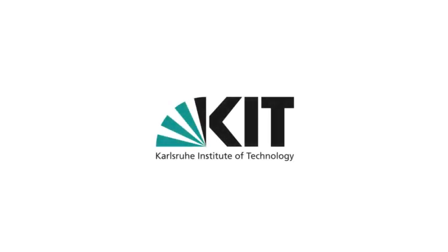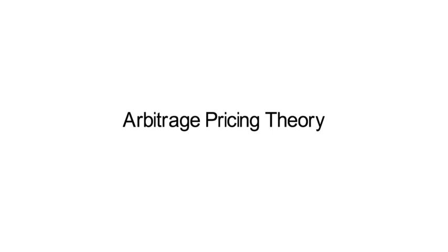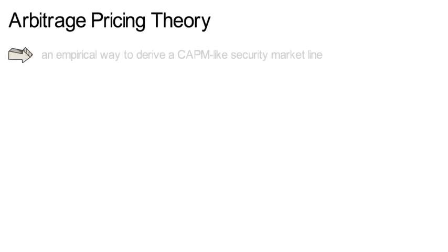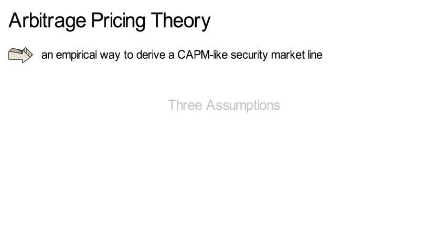This video provides an introduction to the Arbitrage Pricing Theory and discusses its similarities and differences to the CAPM. The Arbitrage Pricing Theory, or APT for short, is an empirical way to derive a CAPM-like security market line. In order to do that, the APT requires three assumptions.